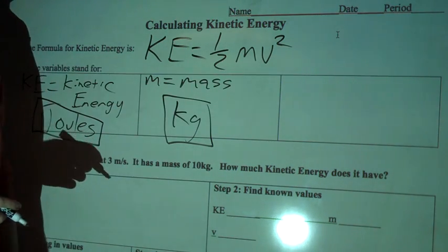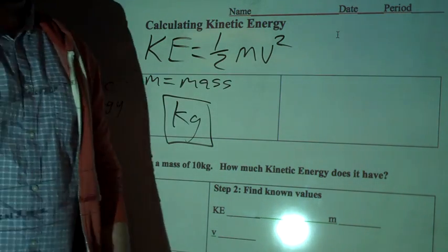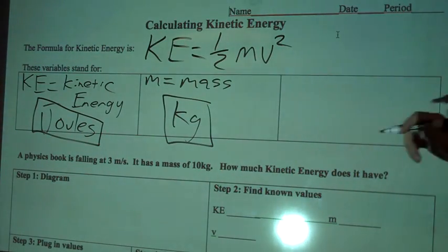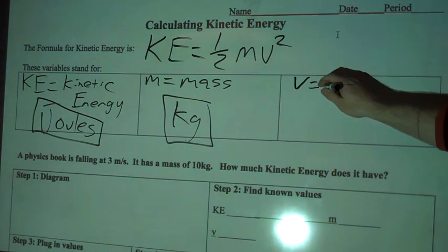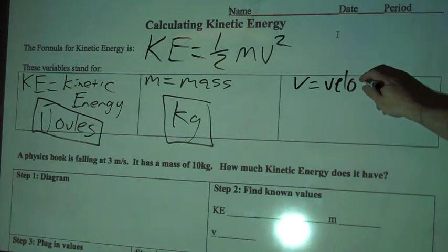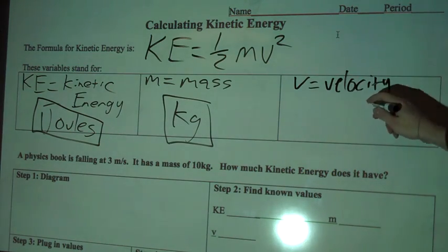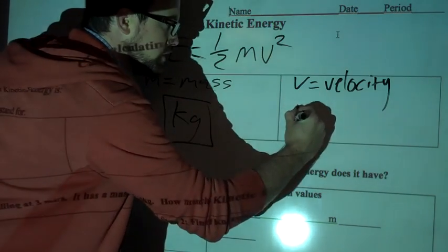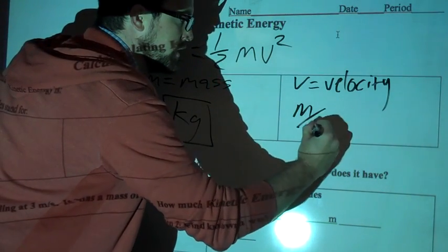And finally V. Since we're talking about kinetic energy, the energy that something has because it's moving, V is the velocity. Velocity is going to be measured in meters per second. This is very important.